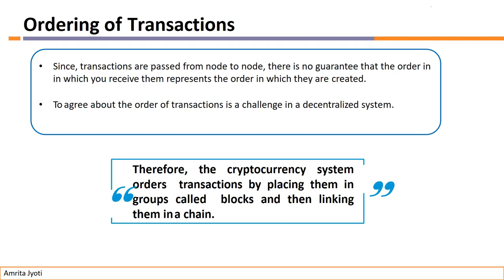Since we can't define the order of transactions, a common concept is used here: group of transactions. The cryptocurrency system orders transactions by placing them in a group. That group is known as the block, linking them in a chain — that is known as the blockchain. When clear ordering cannot be defined, the blockchain concept adds transactions into one group.